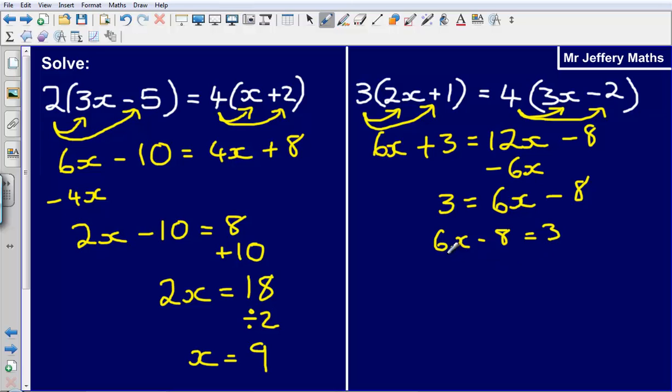So I've got 6x minus 8, first thing I'm going to do here is to get rid of this minus 8 by doing the reverse of minus 8 which is to add on 8. So that means that 6x is equal to 3 plus 8 which would be 11.